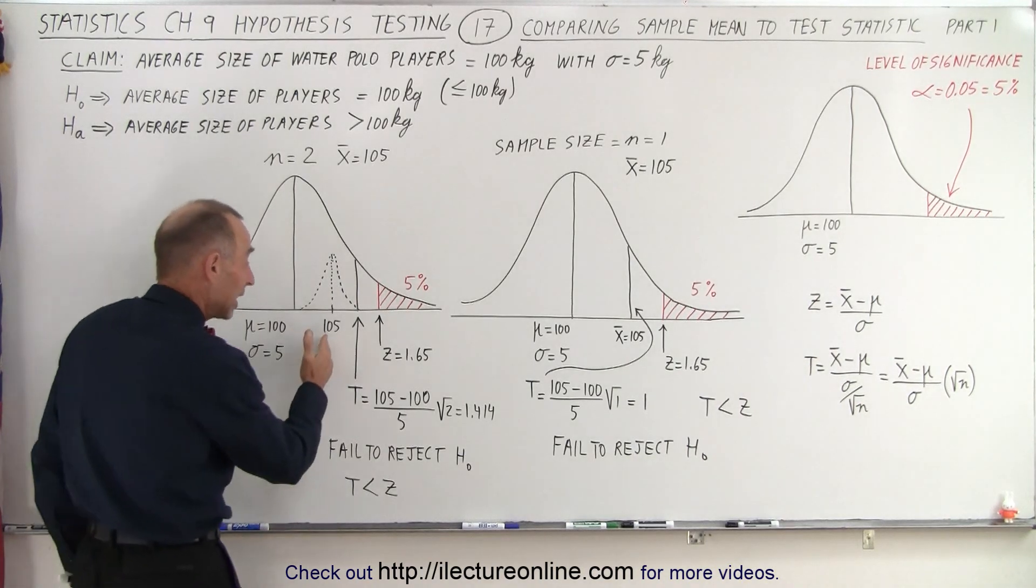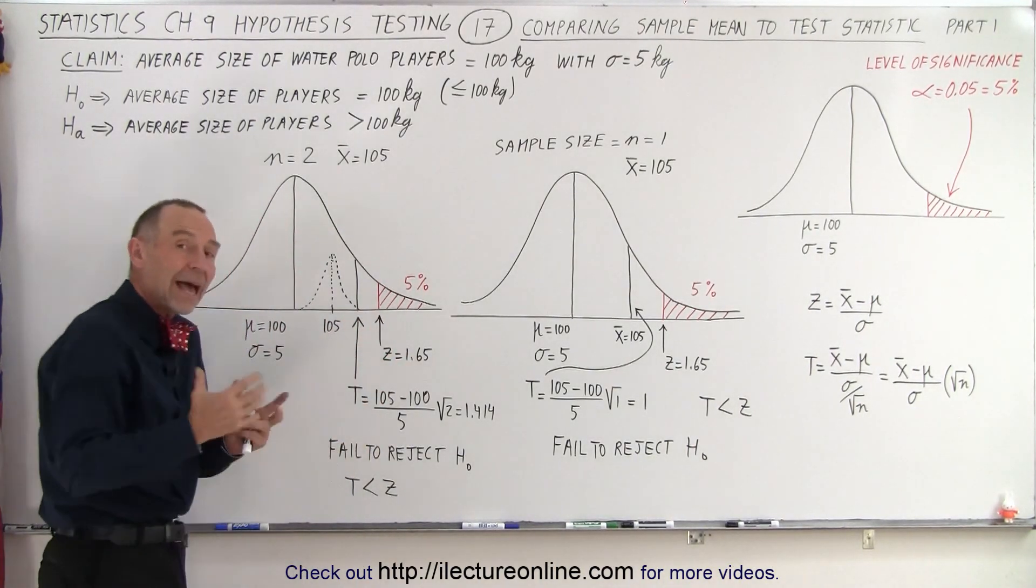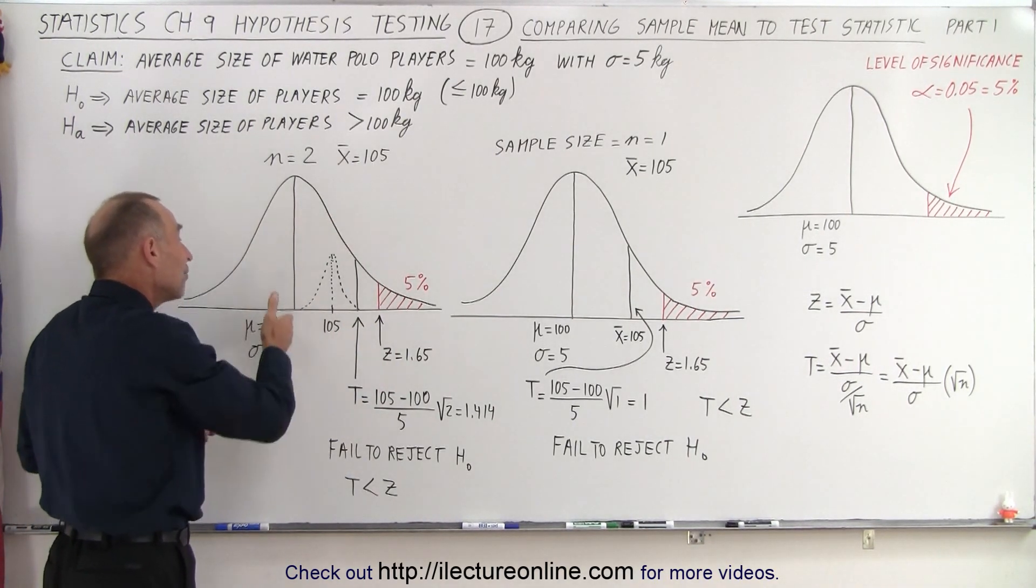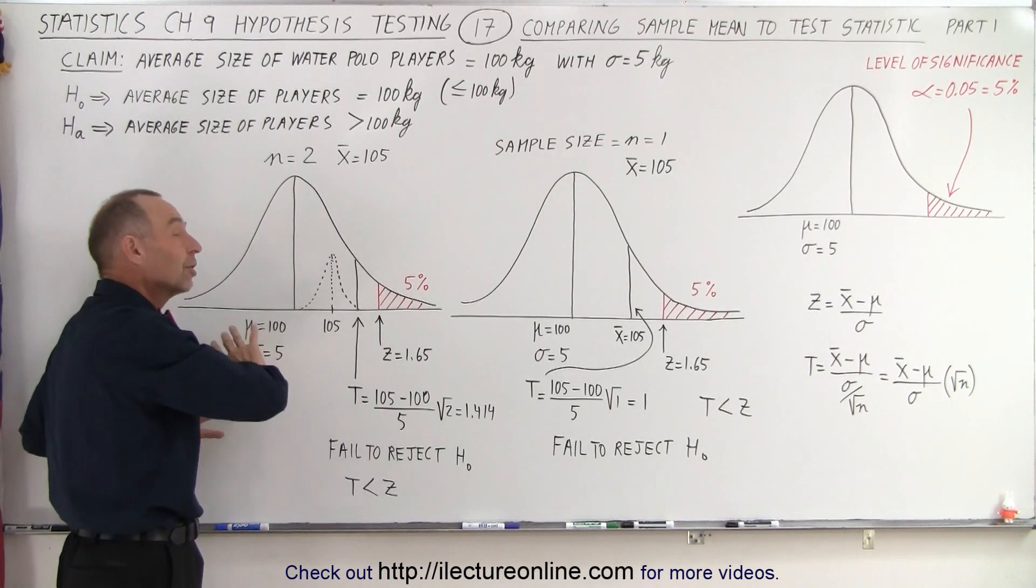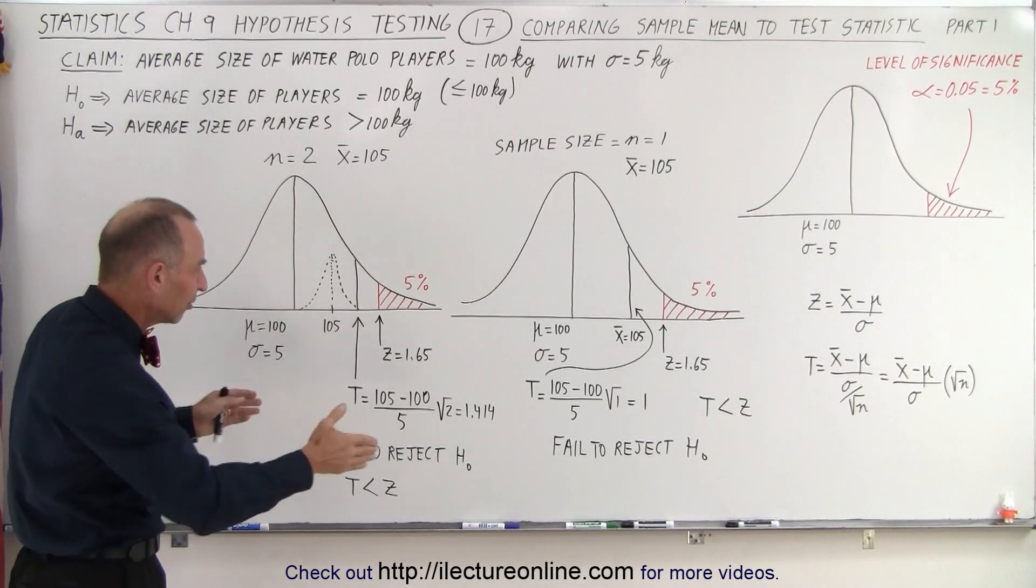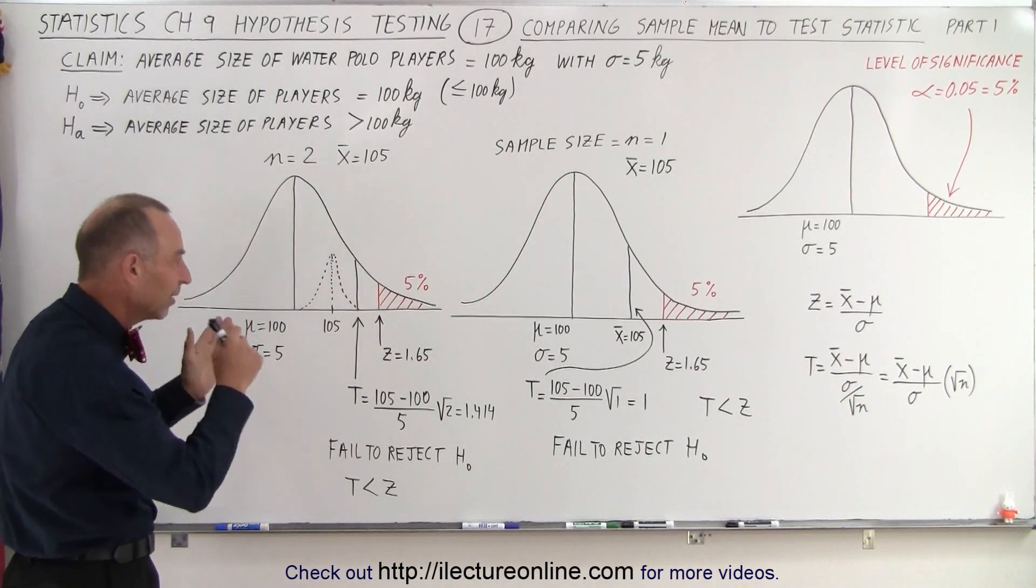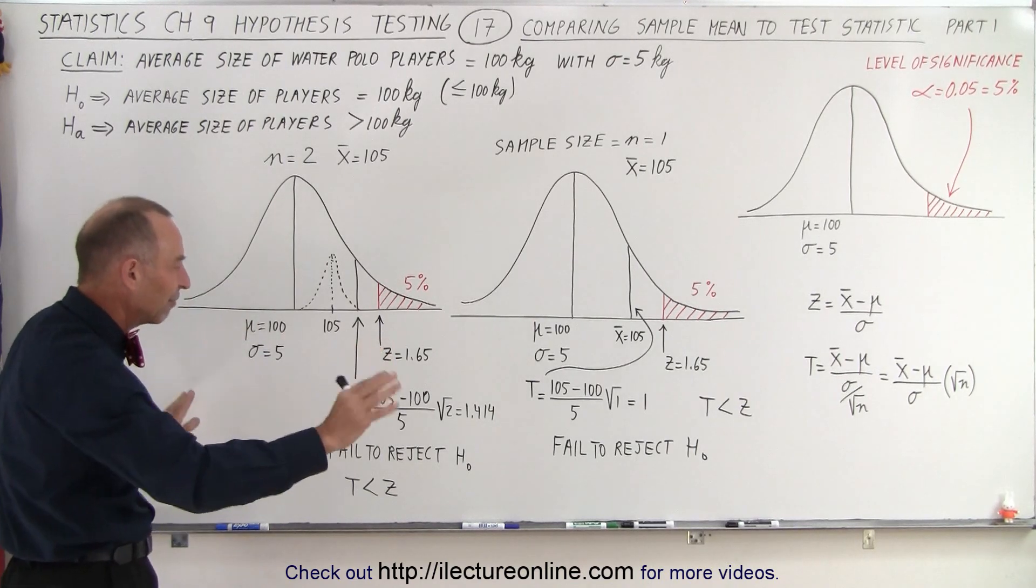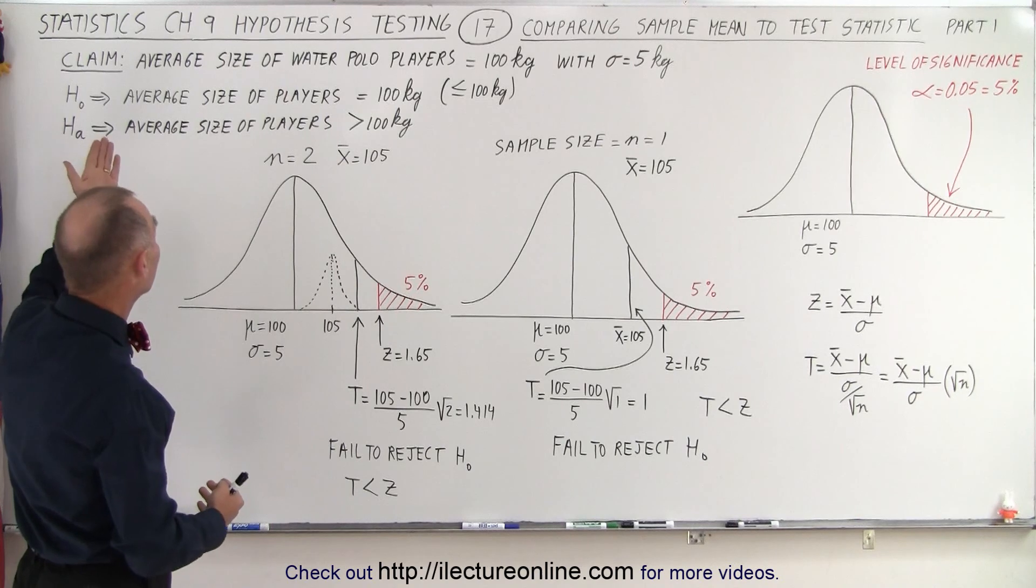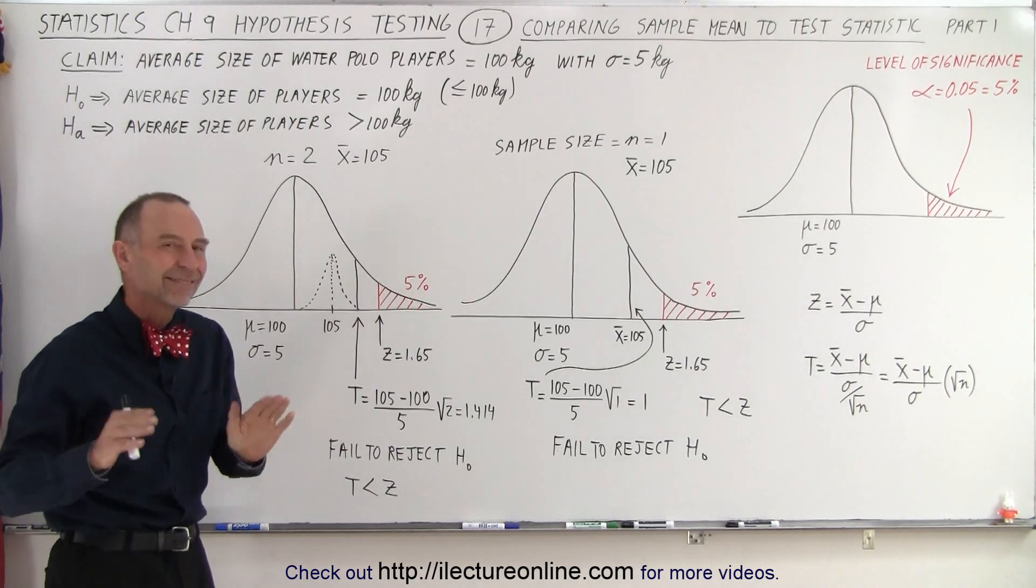But you can see by making the sample size bigger, it gives you more weight that the average that you end up with is maybe significantly different from the average of the population, enough so you can reject the null hypothesis. But we weren't quite there yet. In both cases, the test statistic is smaller than the z-score. So in either case, we fail to reject the null hypothesis, and we still assume that our initial premise, that the average size of water polo players equals 100 kilograms, is still correct.